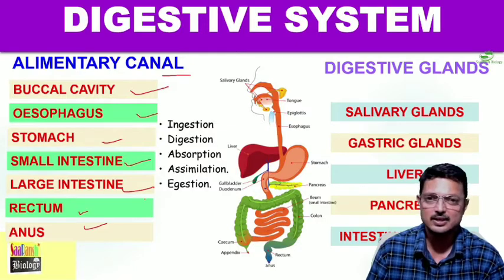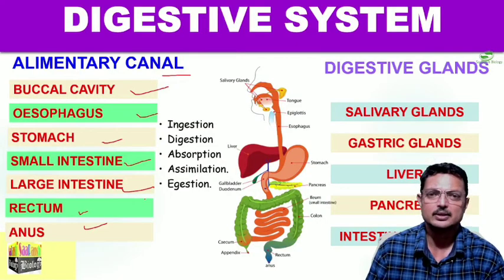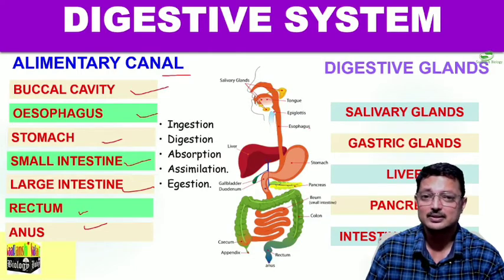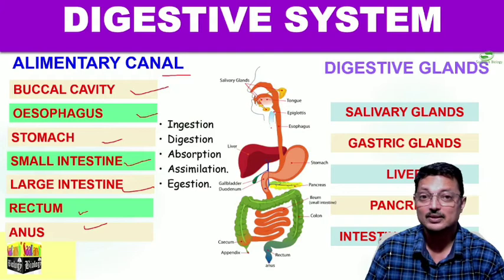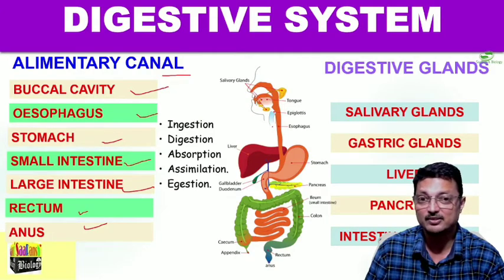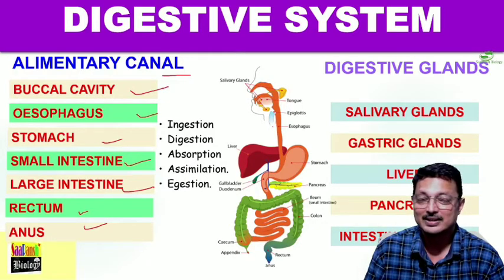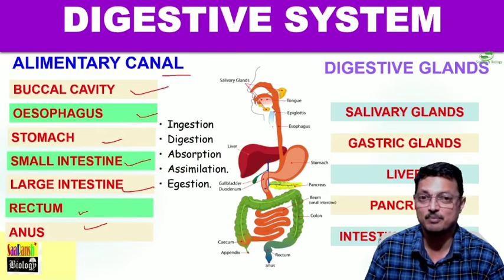As far as digestive glands are concerned, the principal glands include salivary glands - three pairs - and gastric glands present in the wall of the stomach. Then there is the liver. Although the liver does not release any enzyme, yet it is very, very important.